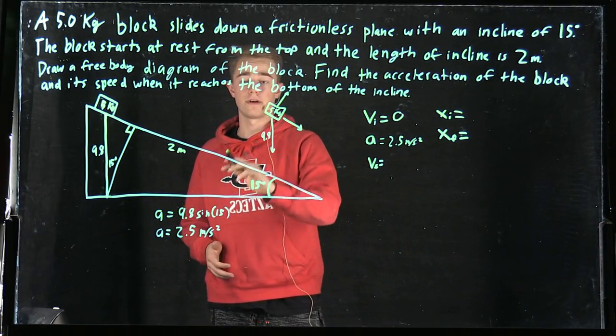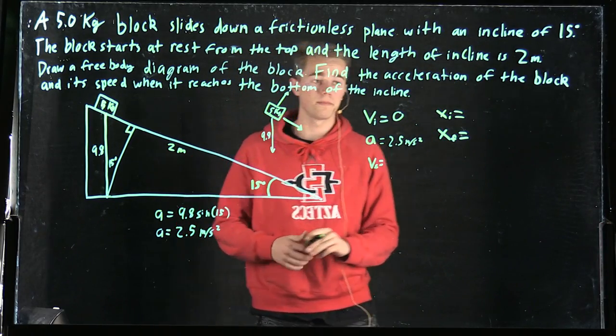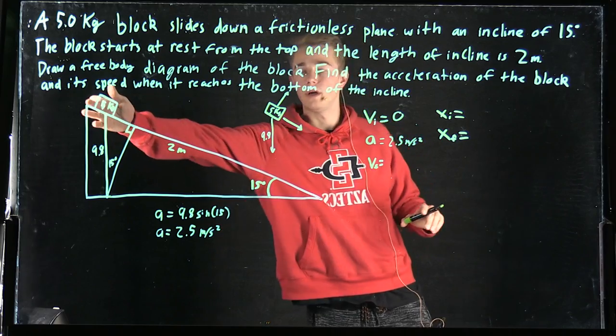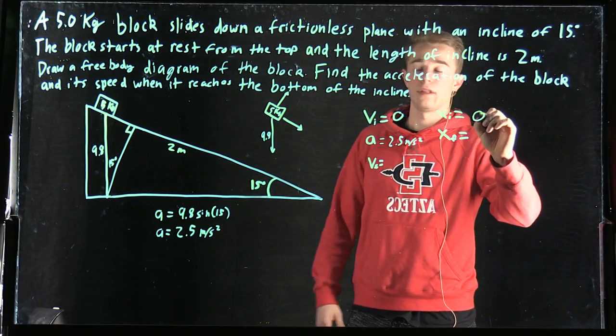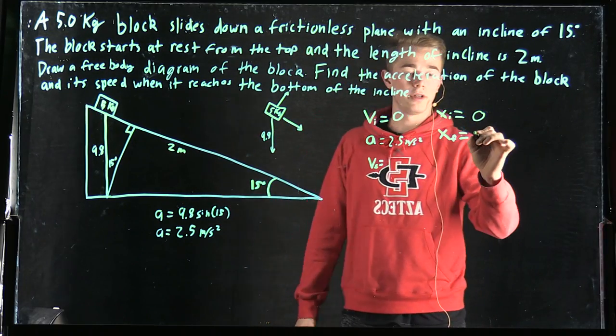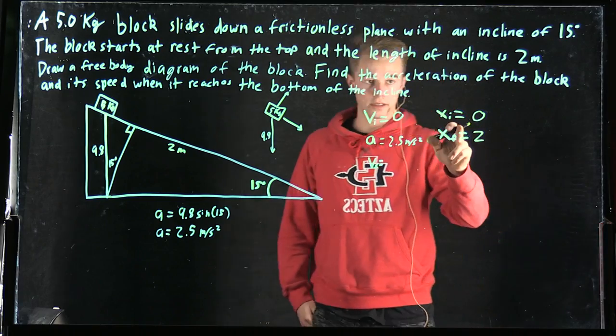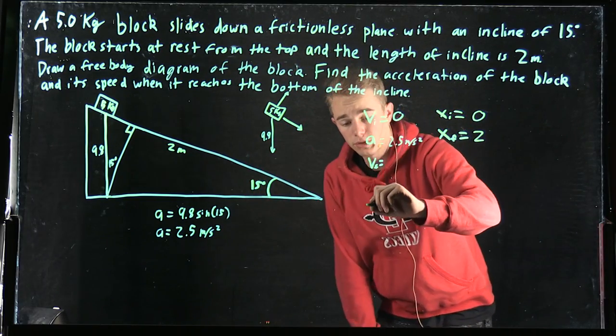Next, we're going to find the speed at the bottom of the plane. To start, we have x initial is 0, and then it slides down the ramp which is 2 meters. So that gives us xi and xf, and we're going to use the kinematic equation.